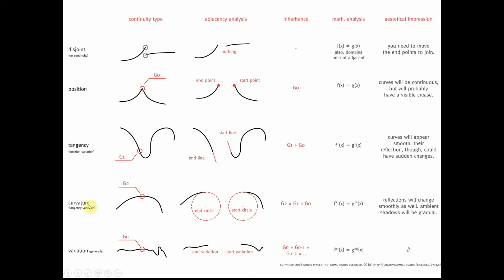G2 continuity is curvature continuity. They have the same radius at that point, or the same curvature. So it's G0 and G1 plus they have the same radius — that's going to be the second derivative. The second derivative of F of X equals the second derivative of G of X at that point. That makes for really good reflection — this is primarily the minimum requirements for good reflections.